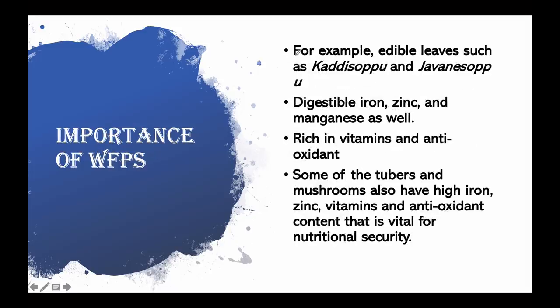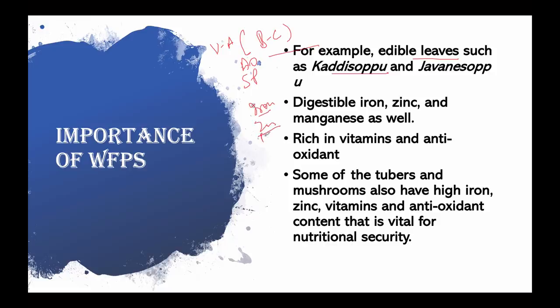The edible leaves of Kadisopu and Javanisopu found in the forest have a very high content of pro-vitamin A — that is, beta-carotene — along with antioxidants and soluble protein. It is found that these leaves are rich in digestible iron, zinc, and manganese. There are a lot of nutrients present in wild food plants.